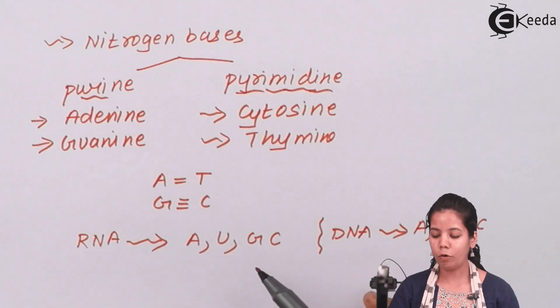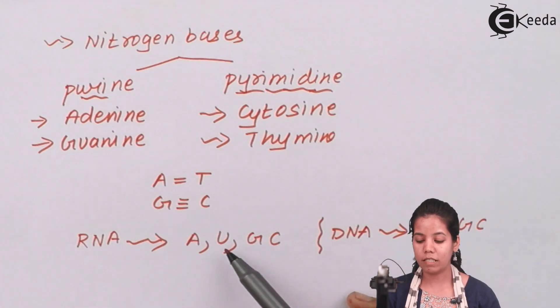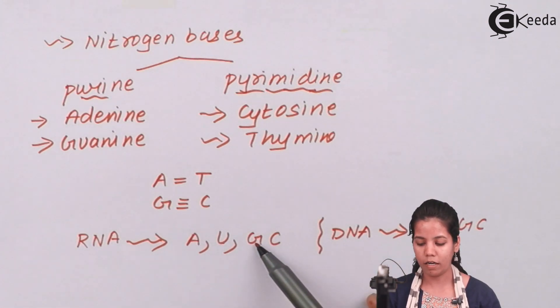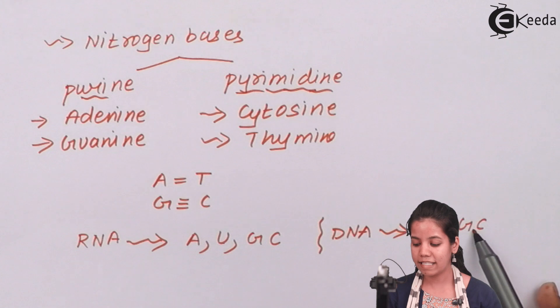Now RNA will have four different kinds of nitrogen bases which is adenine, uracil, guanine and cytosine, whereas your DNA will have nitrogen bases respectively adenine, thymine, guanine and cytosine.